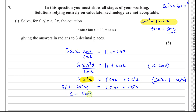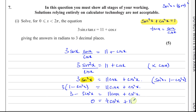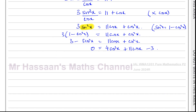Expanding gives three minus three cosine squared x equals 11 cosine x plus cosine squared x. We have what's called a disguised quadratic. Adding three cosine squared x to both sides: three cosine squared x plus cosine squared x gives four cosine squared x plus 11 cosine x, then subtract three from both sides. Let cosine x equal u, and you end up with four u squared plus 11u minus three equals zero.